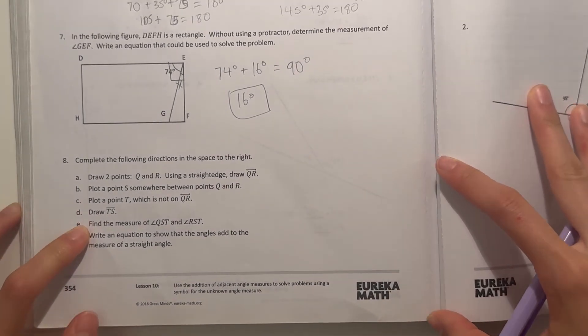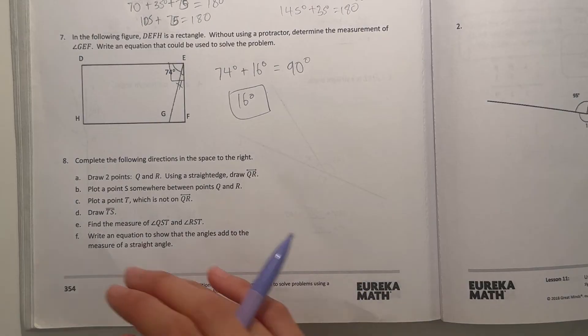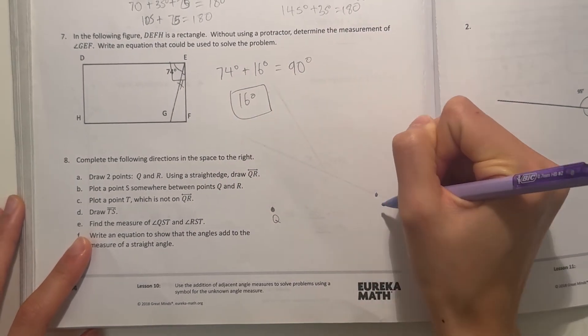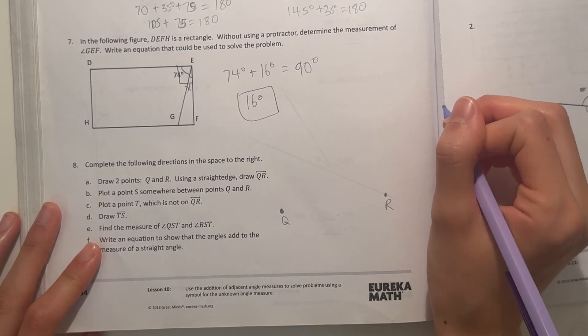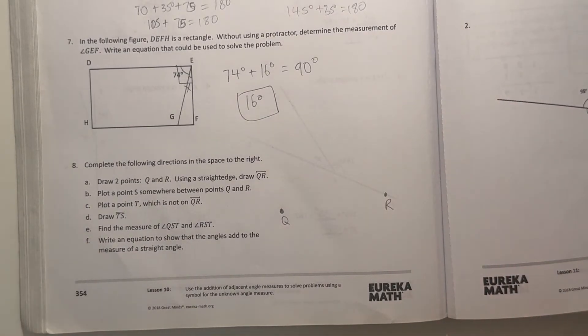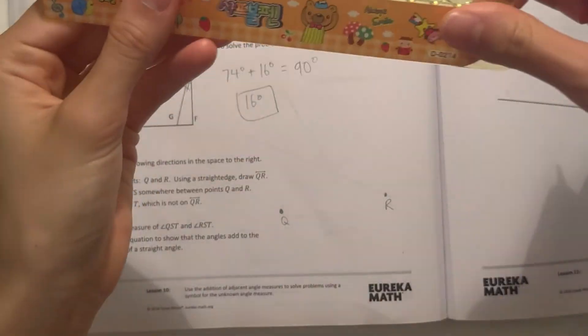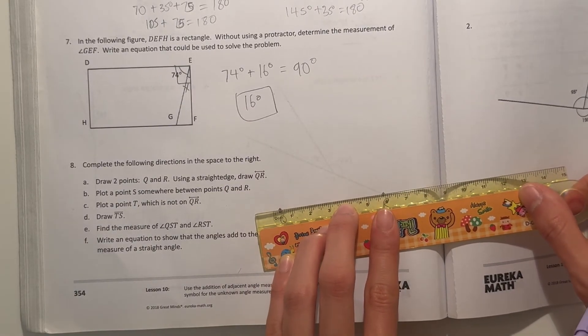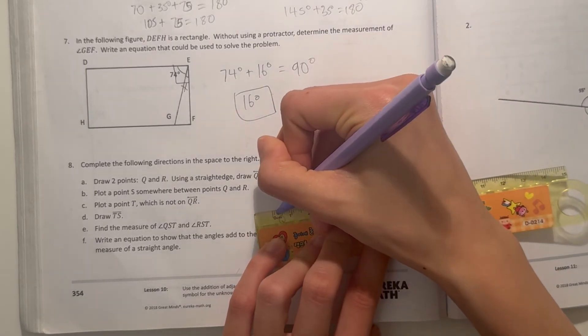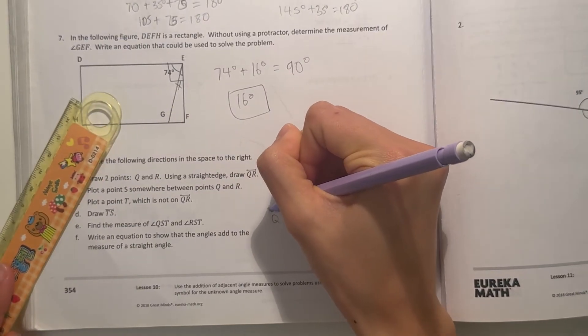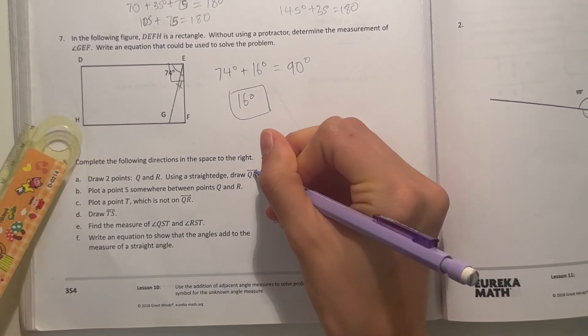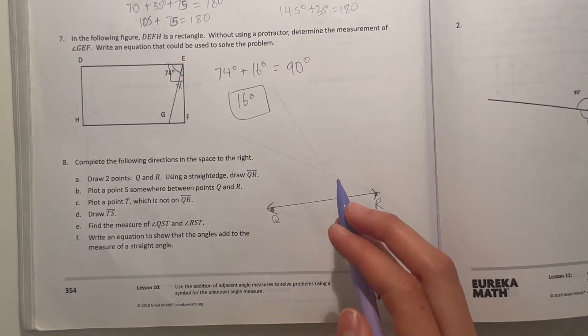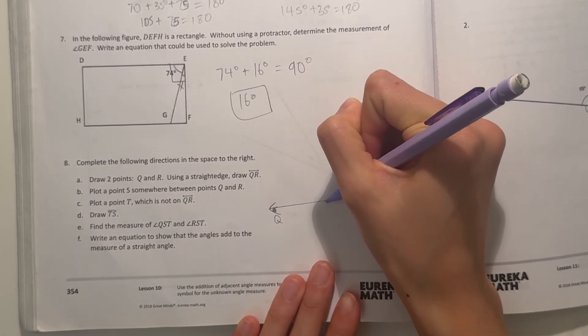Now number eight, complete the following directions in the space to the right. Draw two points Q and R. See, I'll do Q right here and R right here. Use a straight edge, draw QR. Let's see, a straight edge. I think I have a ruler right here. Oh, it's a cute little cartoon ruler. So draw the line. And I think we should have arrows because it has arrows up there. Now plot a point S somewhere between points Q and R. Somewhere between, that means on the line. I think I'll do it right here. And then point S.